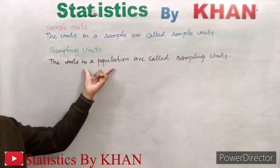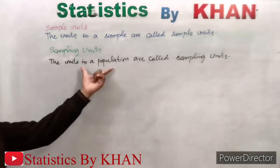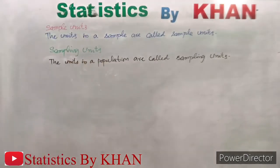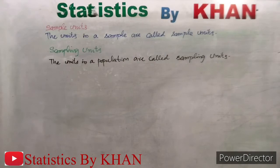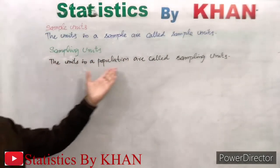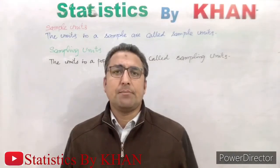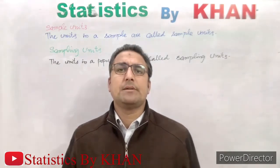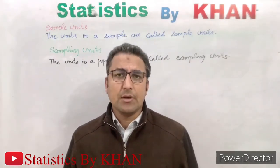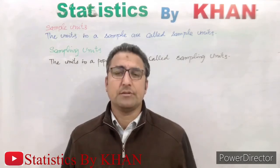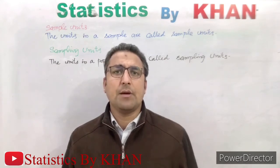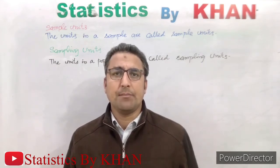We draw a sample from the population units, so sampling units are the units in the population while sample units are the units in the sample. The terms are very much related but their definitions and interpretations are totally different. Sampling units are the units available for sampling, while sample units are those units which have come out after sampling from the sampling units.